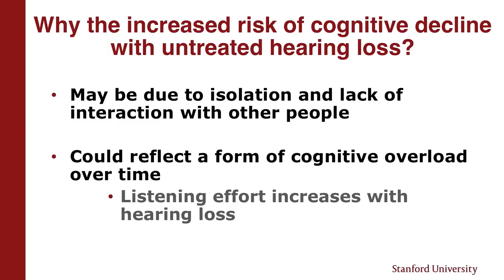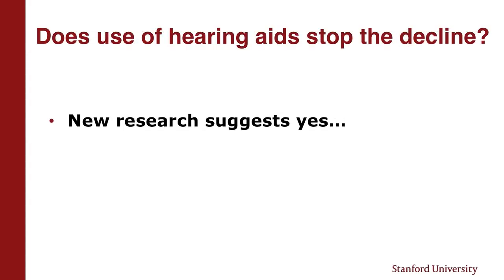Why does this happen? We're not sure yet. Isolation may be one part of it — we know that when people don't interact with others, the likelihood of dementia goes up. Another part is cognitive overload: if you're working so hard to listen all the time, maybe we're overworking our brain. Brand new papers out earlier this year suggest that hearing aid use can stop that decline. So untreated hearing loss matters — it's not just that you can't hear what someone is saying. And hearing aid use matters.